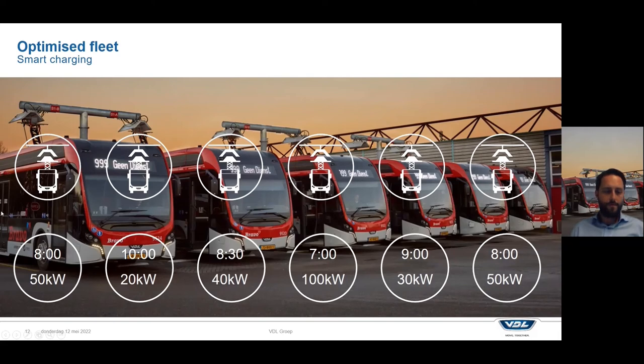So in this example, you could think about having buses that need to start at 8 o'clock, you have them charged with 50 kilowatts. Other buses that start at 10 o'clock, you can charge with 20. Because why would you charge a bus with 50 kilowatts if it then waits in the depot for three hours until the start of the operation? And maybe a bus that has to start even earlier at 7 o'clock, you will charge with 100.